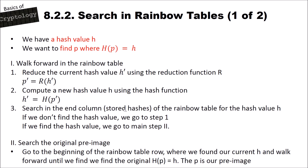We search in the end column of our stored rainbow table for the hash value h. If we don't find it, we go back to step one and continue the hash-reduction cycle until we find the hash value in the endings. When we find it, we move to main step two: searching for the original pre-image. We go to the beginning of the rainbow table row where we found our hash and walk forward until we find the original h(p) equals h, where p is our pre-image or password.